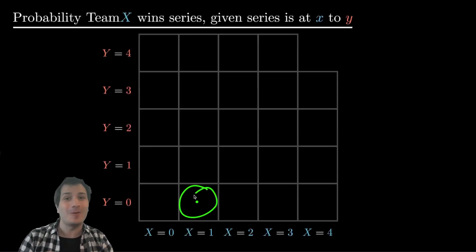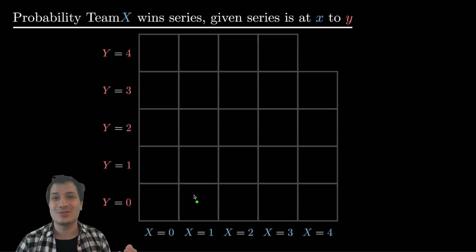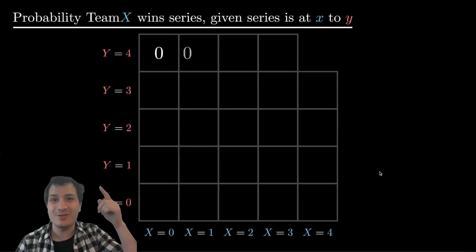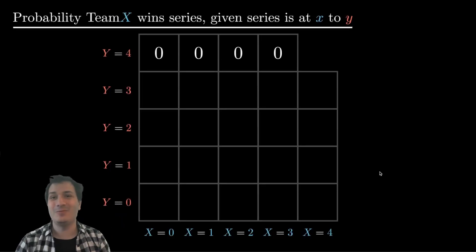So how are we going to fill these in? The secret is to start where it's easy and work your way backwards. And where is it the easiest to answer this question? It's on the edges. So for example, when y equals four, the series is over, team y has already won. So we can fill those in. Team x has a 0% chance of winning if y ever gets to four games, regardless of what team x has done up to that point. Similarly, if team x gets to four, then they have a 100% chance of winning, they have won the series. So those are easy.